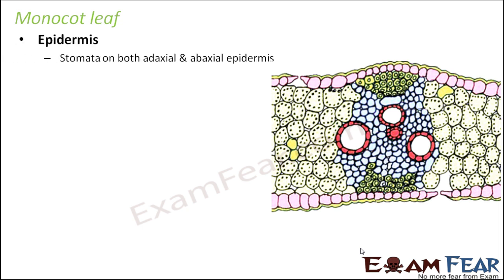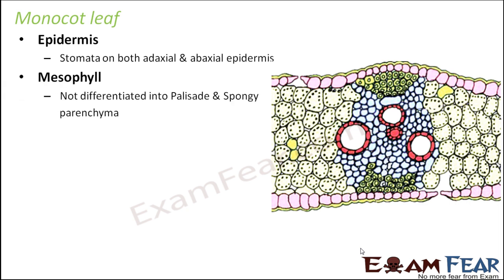Here also you have epidermis, with stomata on both the abaxial and adaxial epidermis. In a monocot leaf, the number of stomata is generally the same on both surfaces.